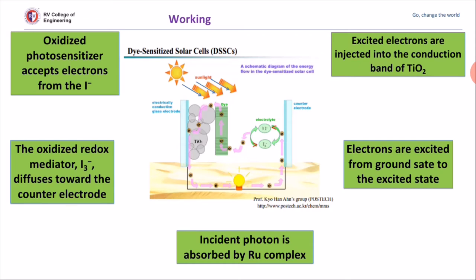The advantages of dye-sensitized solar cells are: processing and fabrication can be done at room temperature, material cost is minimum, and operation is simple. The disadvantages are that stability of the dye is difficult to maintain and handling of the liquid electrolyte is difficult. These solar cells are typically used in power grids, flexible solar cells, and even in military applications.